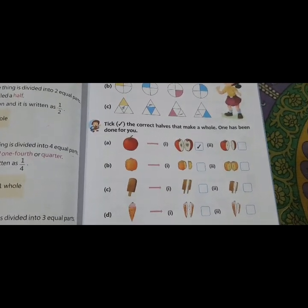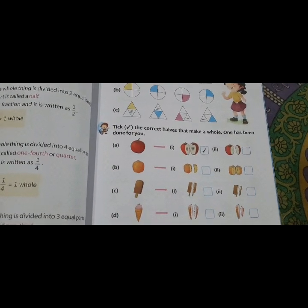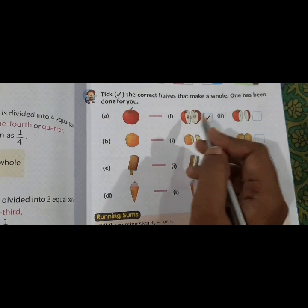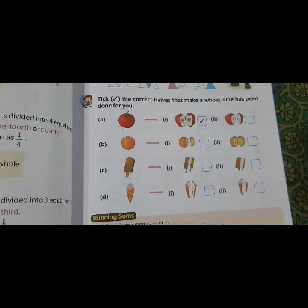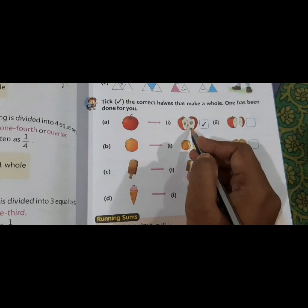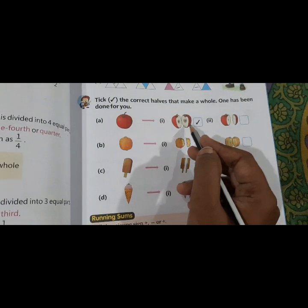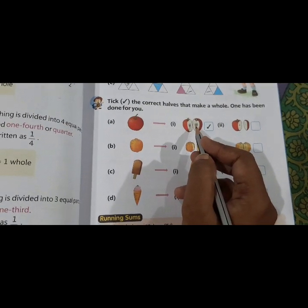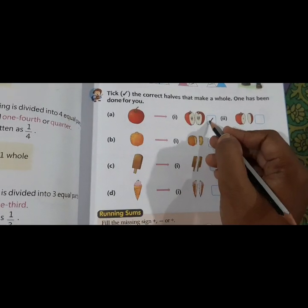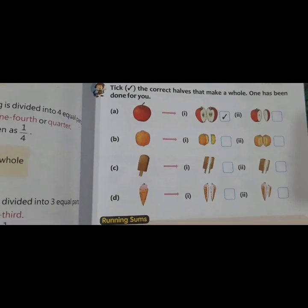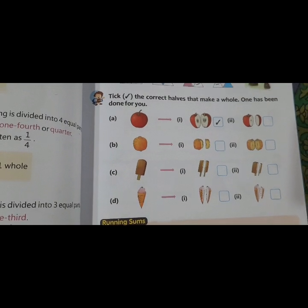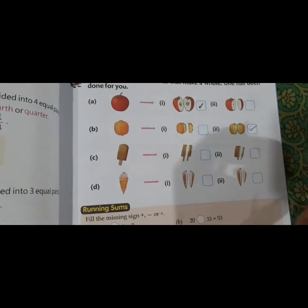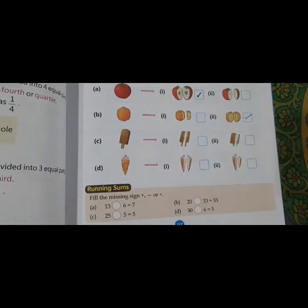Now, take the correct halves, halves means part, that make a whole. One has been done for you. I have one apple. This is a whole apple. This is two part and this is two part. Which is going to be make the correct. If you are joining these two apple, it makes the one whole apple. Both are, if you are joining, in both figure, if you are joining, it makes the whole. But it is divided into equal parts. So let's tick mark that. Now, B, orange. This is and this is. What will be the answer? Obviously, so tick mark it. Now C and D, you have to do by yourself.